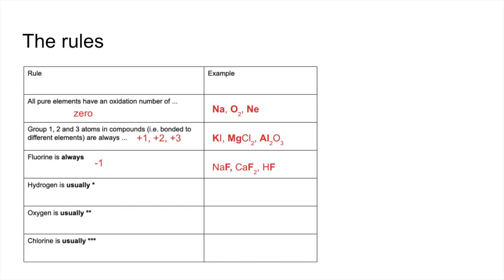It gets a little trickier for the last three rules because of the word 'usually.' Hydrogen is usually plus one — there are examples of hydrogen being plus one. However, it is not plus one when bonded to a metal. When hydrogen is bonded to a metal in a metal hydride, hydrogen has a negative one oxidation number.